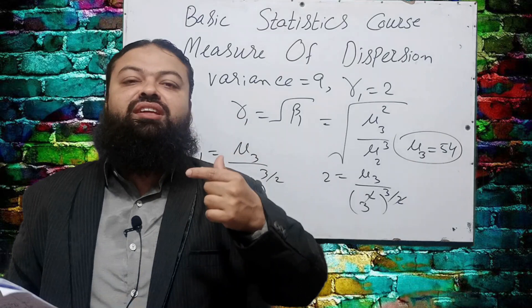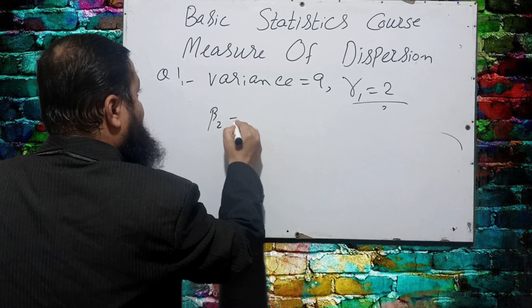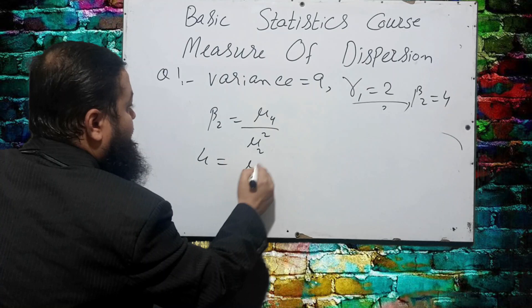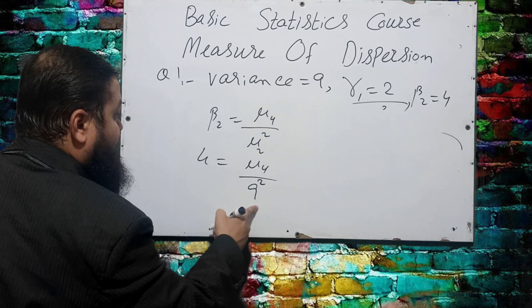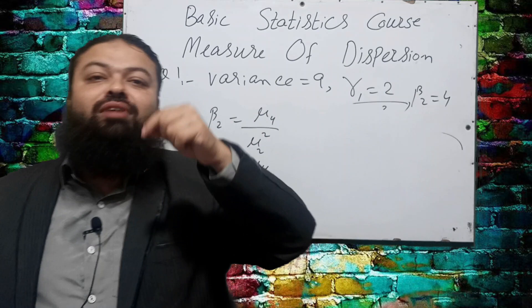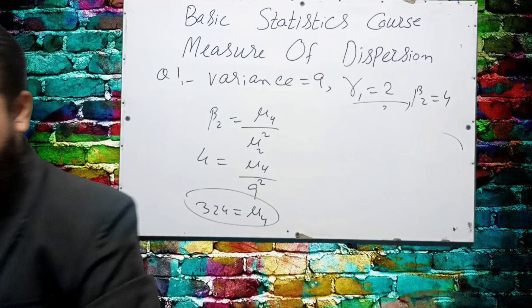The question also asks for the fourth moment. We know β₂ = μ₄ / μ₂². β₂ is given as 4. Substituting: 4 = μ₄ / 9² = μ₄ / 81, so μ₄ = 4 × 81 = 324. Variance is 9, γ₁ is 2, β₂ is 4, and the answers are μ₃ = 54 and μ₄ = 324. A very important question for statistics papers.